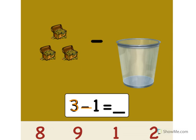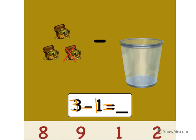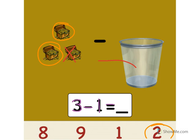3 minus 1 equals what? Let's take away 1. 1. 1 treasure chest in the trash. What does that leave us with? Let's count. 1, 2. Point to the number 2. Good job. 3 minus 1 equals 2. Good job.